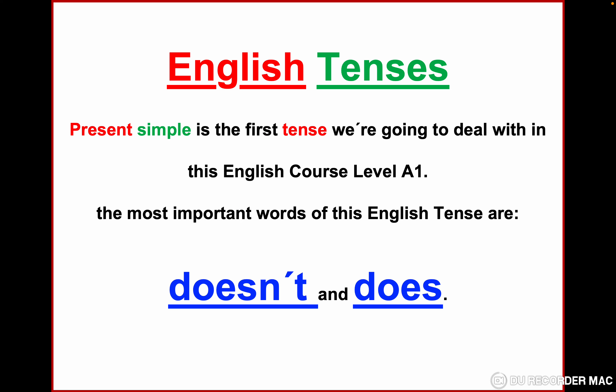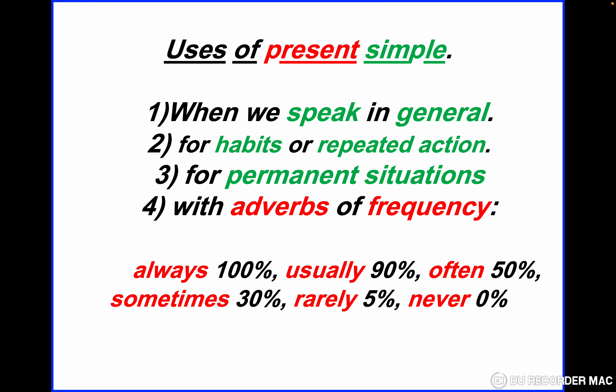English tenses. As I said in the previous lessons, the present simple is the first tense we are going to deal with in this English course, level 1, A1. The most important words of this English tense in this lesson are going to be 'doesn't' and 'does'.